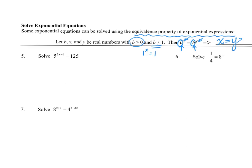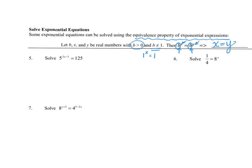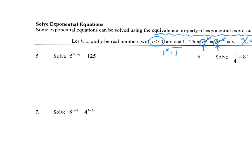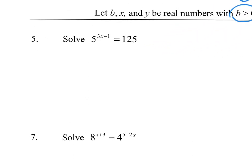When we look at problems five, six, and seven, what we're trying to do is see if we can make those bases be the same, because if we can, then we can use that equivalence property. So if we look at this first one, I have a base of five. There's really no other way to write five, but 125 I can write as five to the third power — five times five is 25, times five, that's 125. So we have five to the three x minus one is equal to five to the third. Since the bases are matching, the exponent three x minus one has to equal three.